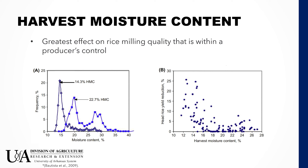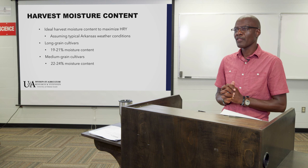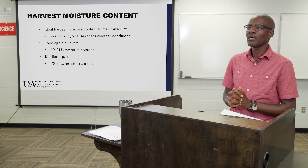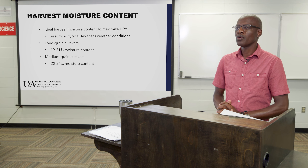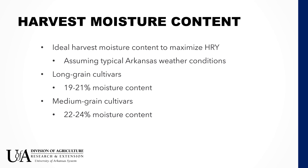It has been established from lab studies that head rice yield has a very good correlation with harvest moisture content. The lower the harvest moisture content, there is a reduction in head rice yield. So we have what we call the optimum harvest moisture content for different rice types, and this depends on whether it is a hybrid cultivar, long grain, or medium grain cultivar. In our region, we harvest long grain rice at about 19 to 21% moisture content — the optimum for maximum head rice yields.